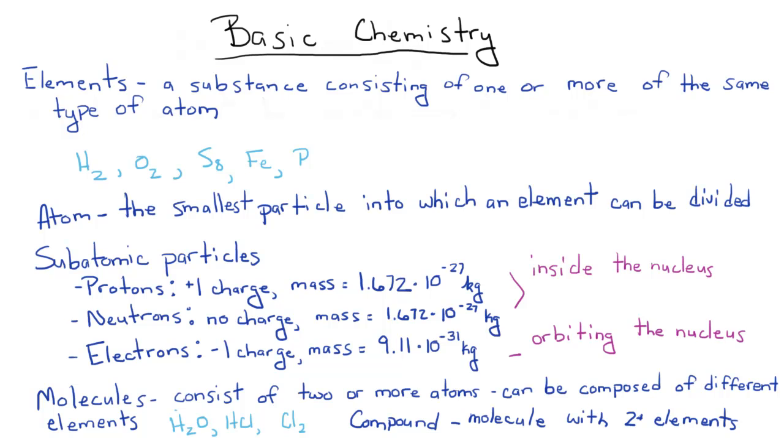Protons and neutrons are located inside the nucleus or the center of an atom. Protons have a charge of plus one. Neutrons have no charge. Electrons are located outside the nucleus, orbiting around the nucleus, and they have a charge of negative one.